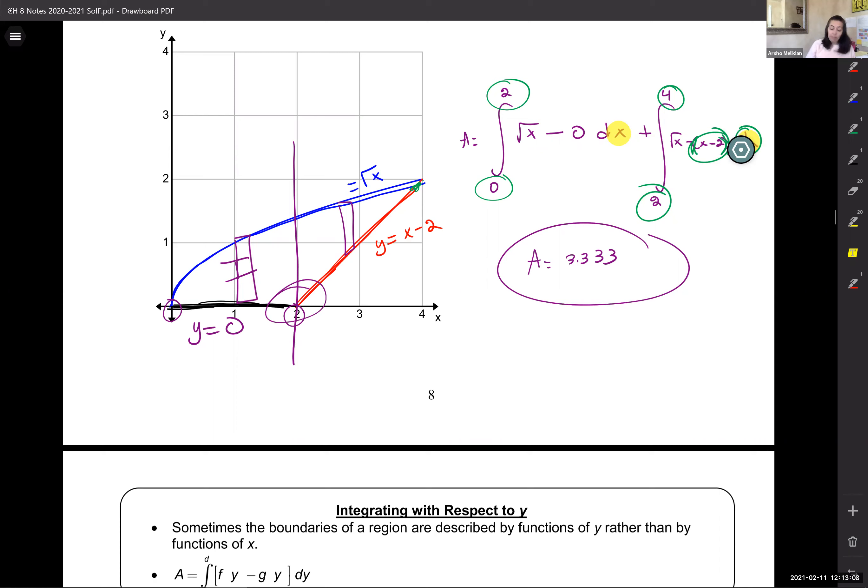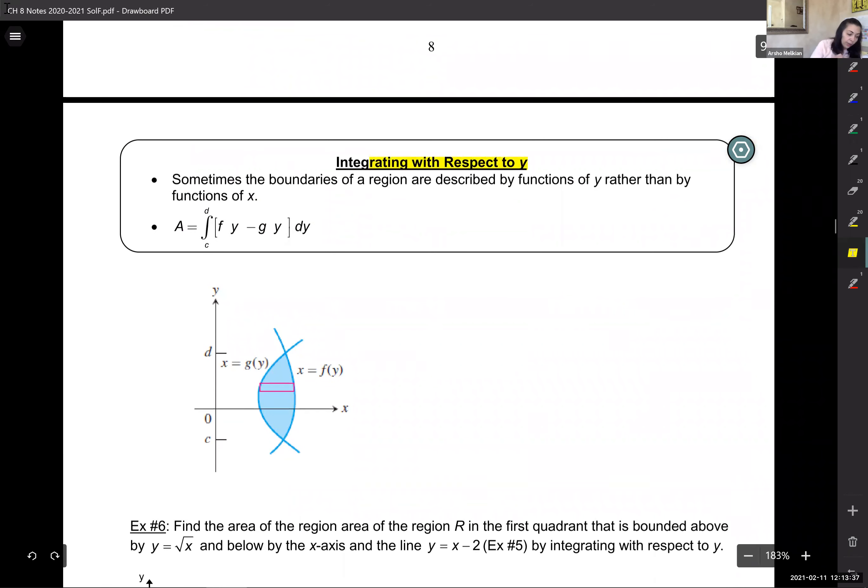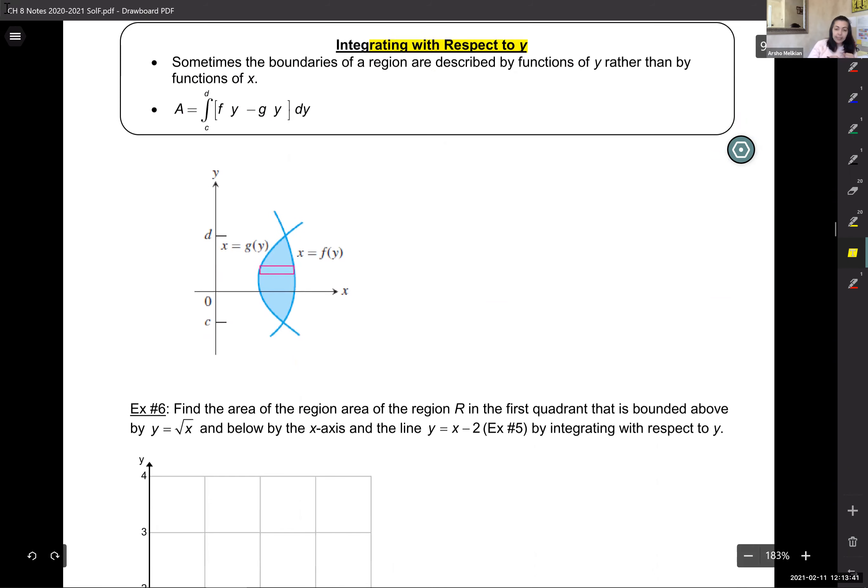So now, what we did to get around that was, we split it up and we did two integrals. But, maybe there is another way. Maybe you don't have to draw the rectangles that way. Maybe, if I draw the rectangles another way, if I draw my rectangles this way, what happens there? Do you see how they have the same function on the left and the right all the time, right? So, maybe that's another way of doing the same integral. And, we call that integrating with respect to y.